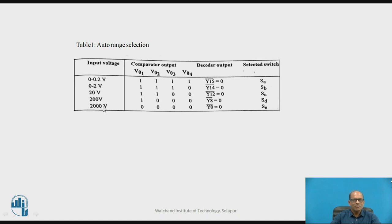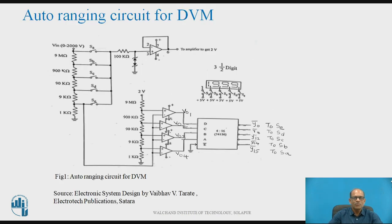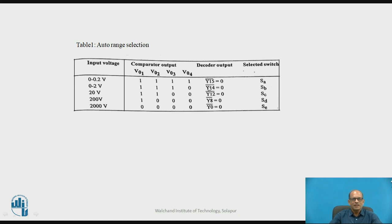In the auto-range selection table, whenever the input voltage is 0 to 0.2V, the output of all four comparators is high — that is, VO1, VO2, VO3, and VO4 are all high. The circuit connections and resistance values are selected such that when the input is between 0 and 0.2V, all comparator outputs are high. When all comparator outputs are high, Y15 of the decoder goes low, and after the inverter it controls switch SA, making switch SA turn on.